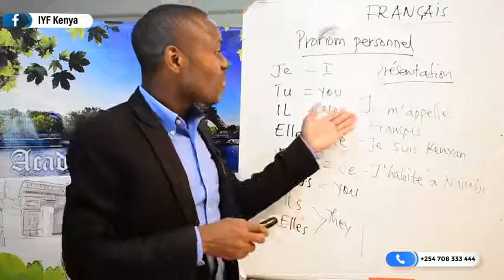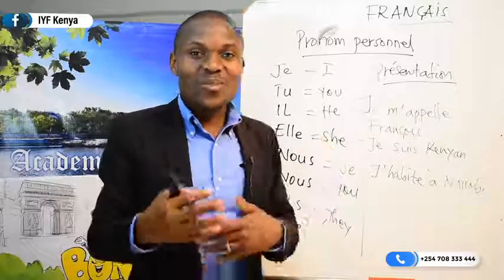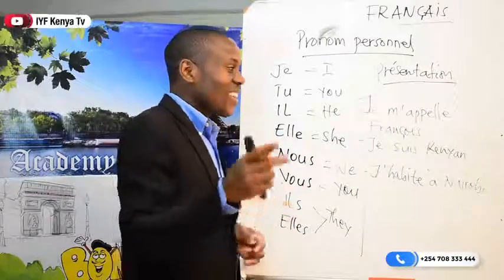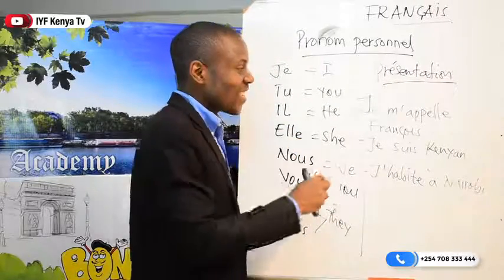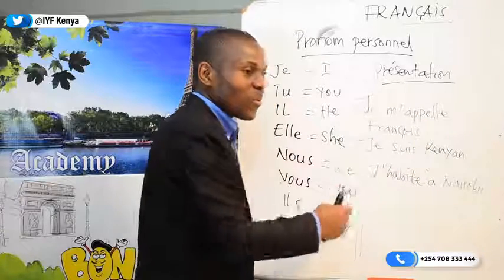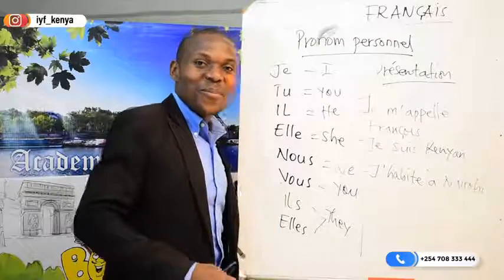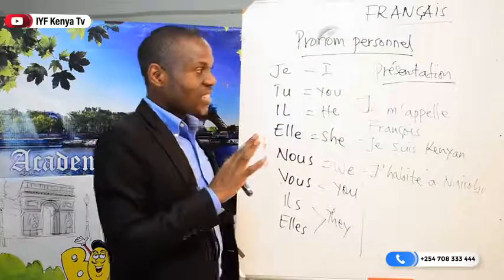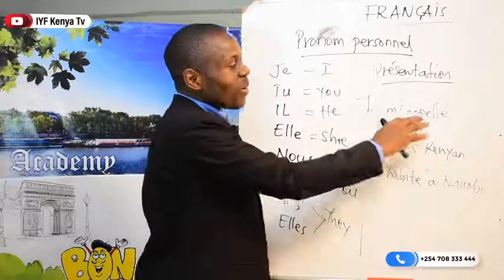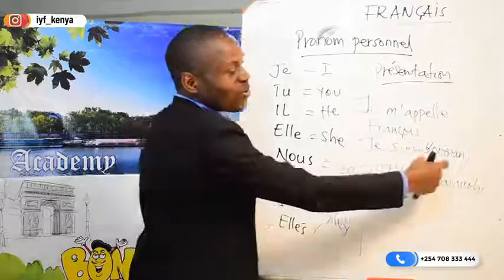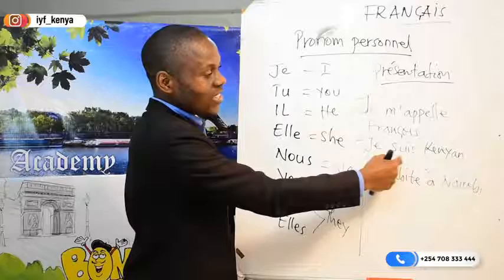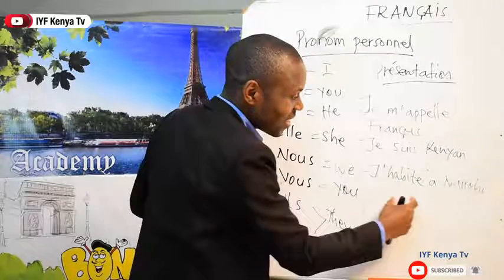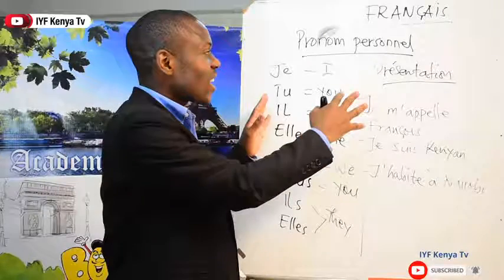J'habite à Nairobi. So you say 'je m'appelle' — this is obvious, so many people, even in Congolese music, you hear musicians sing je m'appelle something. Je m'appelle François — here you can put your name: je m'appelle Kamau, je m'appelle Aloj, je m'appelle Musioka. Then je suis Kenyan means 'I am a Kenyan.' And j'habite à Nairobi — obviously you have the place, so it means 'I stay in Nairobi.' For today we'll cover those two topics: pronom personnel and présentation. Thank you very much — IYF Online Academy.